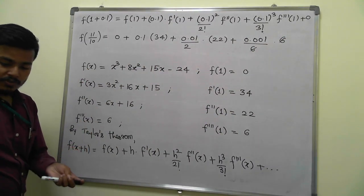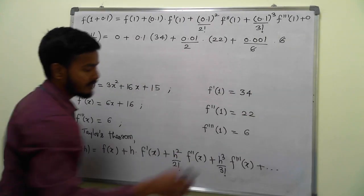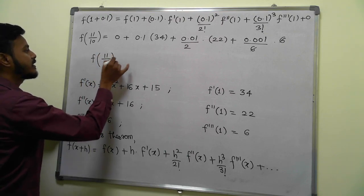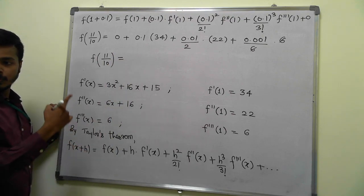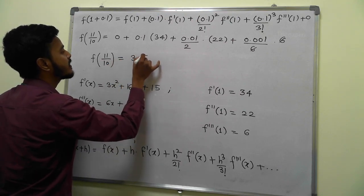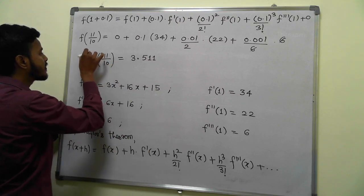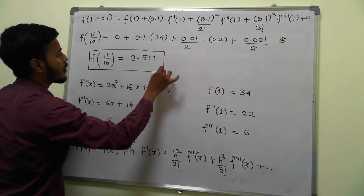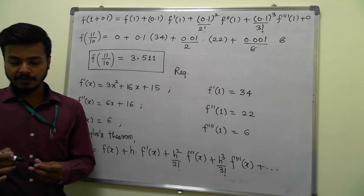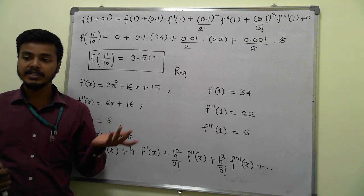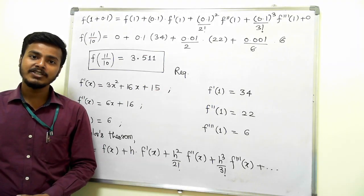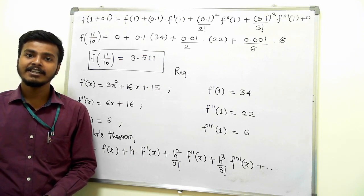You can use a calculator to get the value of this. At last, f(11/10) equals 3.511. This completes the problem. This is what you wanted to find. I hope the problem we've taken in this learning video makes sense. Thank you for watching and enjoy learning.